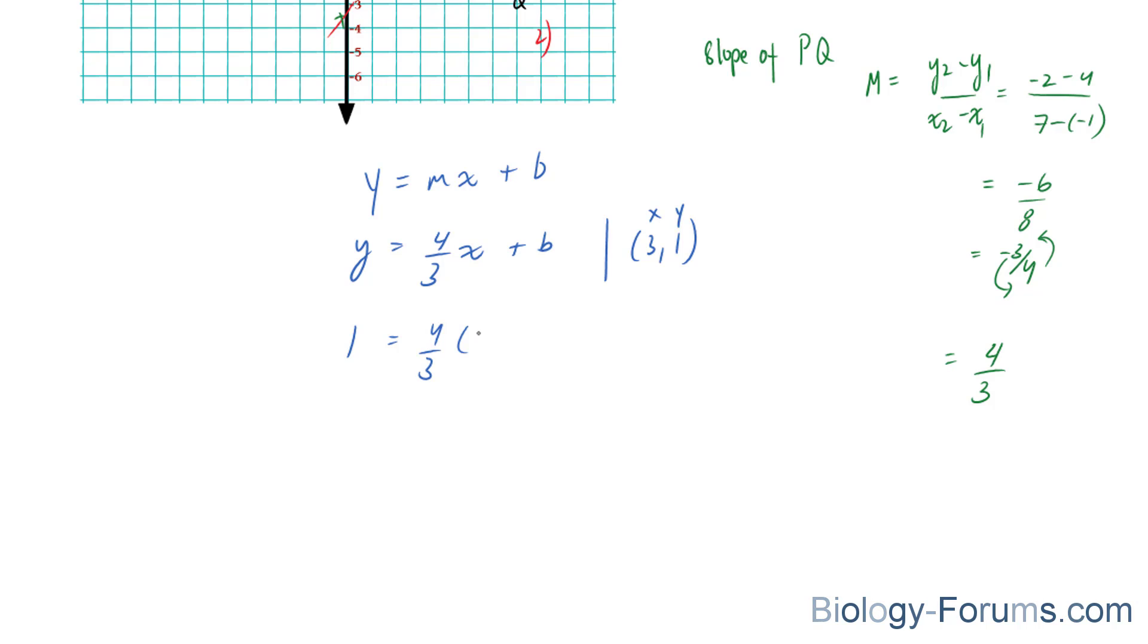And our y is 1, 4 over 3 times 3 plus b. It appears that these 3s will cancel out, leaving us with 1 is equal to 4 plus b, 1 minus 4 is equal to b, and therefore our b is equal to negative 3. And that's a lot better than eyeballing it. So I'm going to start by substituting this back into our growing formula, y is equal to 4 over 3x minus 3.